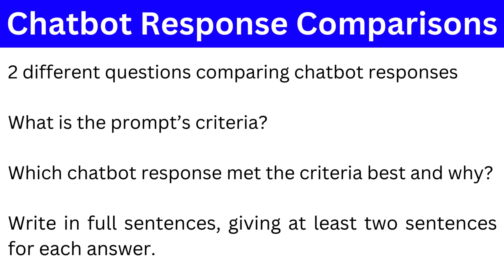The next two questions are both comparing two chatbot responses, deciding which is better, and explaining your reasoning why. For these questions you should examine what the prompt's criteria was and see which chatbot response met this best. For example, if the prompt asks for an eight-line poem about cars and one chatbot meets this criteria and the other does a ten-line story about a farm, then there's a clear winner. For the short explanation on why you chose that response, write a few sentences about which response better met the prompt's criteria and if either was written in a superior way or had a better flow to it. These should be full sentences with correct spelling and punctuation.